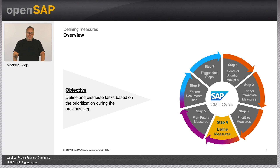Hello, and welcome to Unit 5, Defining Measures. During this week, we talked a lot about the SAP crisis management team cycle in general, and I walked together with you through steps 1 to 3. We learned about the situation analysis, how to trigger immediate measures, and why it is important to prioritize the measures. Today, I will talk about step number 4, Define Measures.